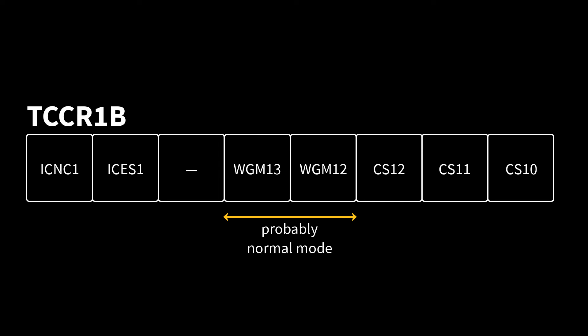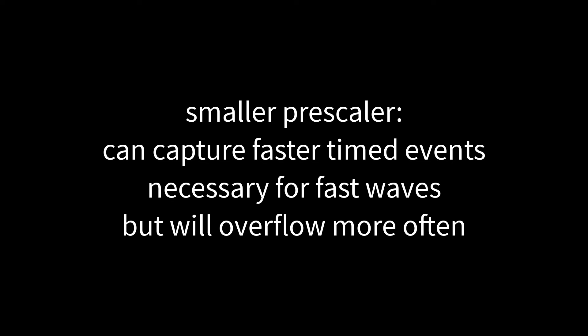In TCCR1B, the input capture unit noise canceller should be activated by setting ICNC. The ICES bit will be either 0 or 1 depending on the desired trigger event. The prescaler will be selected based on your desired precision for the calculations of the wave period. The smaller the prescaler, the smaller the intervals of time that we can measure using the timer counter. However, this has the consequence of having less time elapse before the timer counter overflows. You should only use a small prescaler if you know you will have a fast wave period and need to be able to make calculations accordingly.